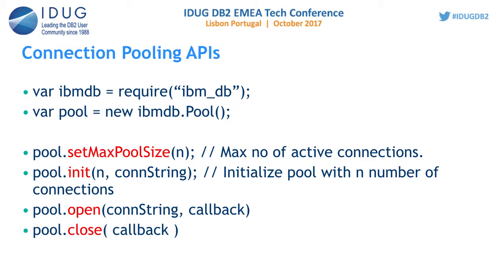We have four important connection pooling APIs. The first is setMaxPoolSize, which tells the driver how many connections should be active at a time. If you set the max pool size to 10, at any time you will not have more than 10 active connections. The IBM DB driver controls this.